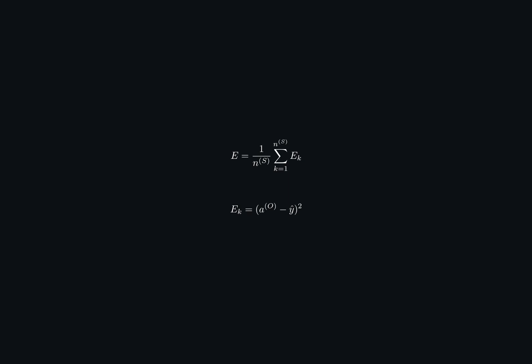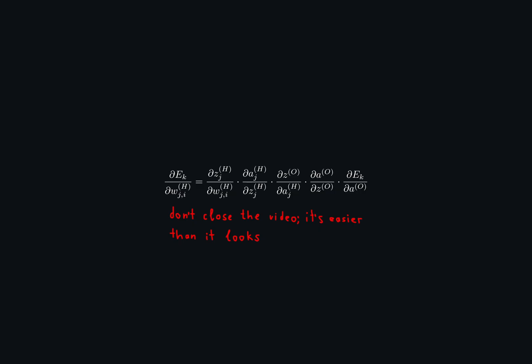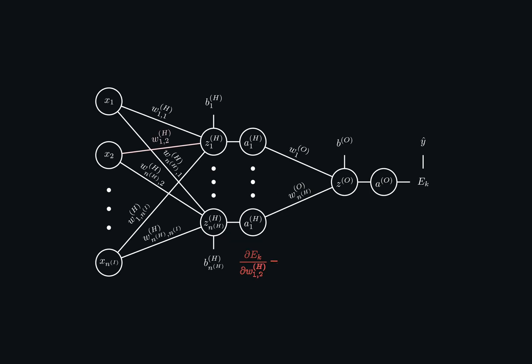The mean squared error is commonly used as the error function. Y hat here denotes the expected output. To calculate the derivative of this error function with respect to some random weight, we need to calculate partial derivatives of all components that depend on this weight and multiply them. This is called the chain rule of derivatives. I can better explain it visually. For example, let's take this weight with indices 2 and 1.